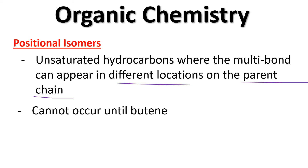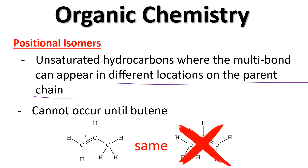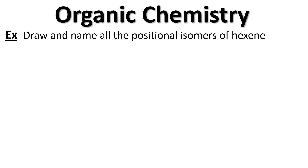Positional isomers cannot occur until butene. Looking back at propene, there's only one way to draw it — if you flip it around, the double bond is still in the one spot. The rule is: we always want the multi-bond to be in the lowest possible numerical position. So those two versions of propene are actually the same molecule; we call it simply propene, not 1-propene.